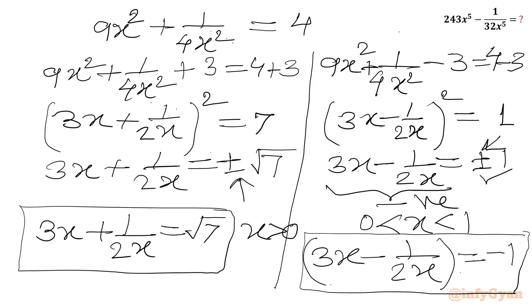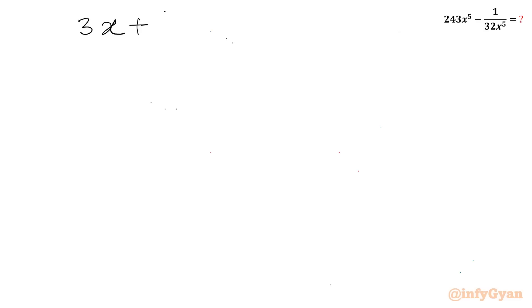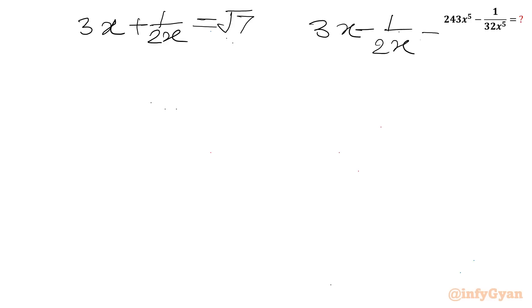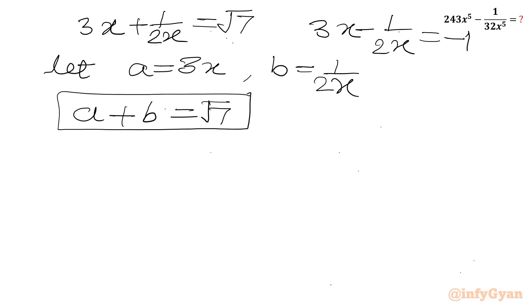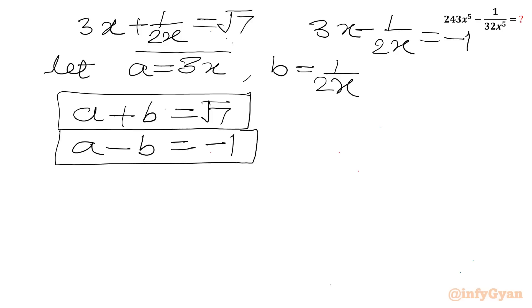Let A = 3x and B = 1/(2x). Then from our two equations: A + B = √7 and A minus B = -1. Taking the product, A times B = 3x times 1/(2x) = 3/2.